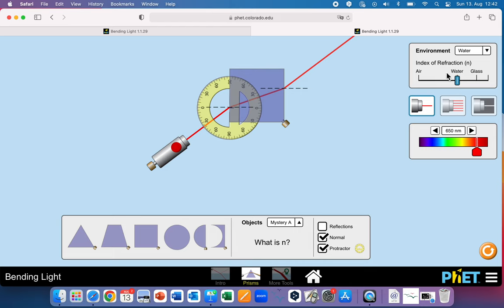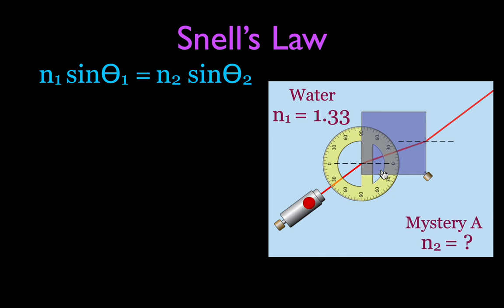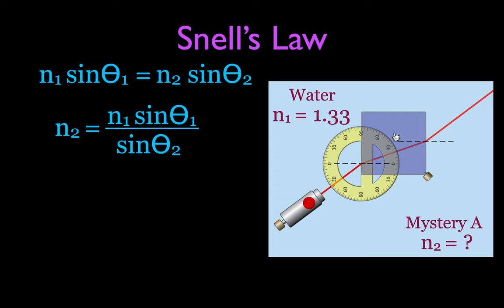We know this is water, so we know its index of refraction — we can look that up. We know the two angles but we don't know the index of refraction of the mystery material. Using Snell's law: N1 × sin(θ1) = N2 × sin(θ2). Solving for N2: N2 = N1 × sin(θ1) / sin(θ2). The 1s are always the incoming side.